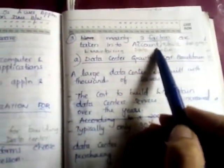Three main factors are taken into account while designing and maintaining data centers. The first factor is data center growth and cost breakdown, second is low-cost design philosophy, and third is convergence of technologies.